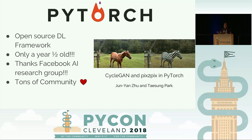PyTorch is an open source deep learning framework primarily developed by Facebook's artificial intelligence research group. It was publicly introduced in January of 2017, so it's really new — only been around for about a year and a half. While it is still new, users are rapidly adopting it because it's very modular and supports dynamic computation graphs. The dynamic computational graphs allow you to change how the network behaves on the fly, unlike static graphs which TensorFlow uses.